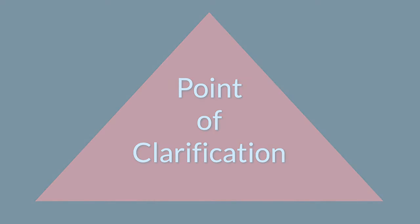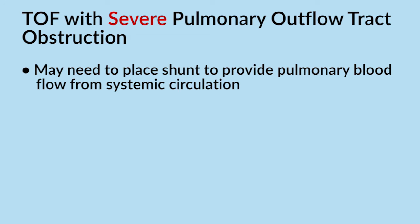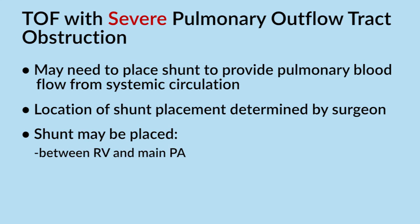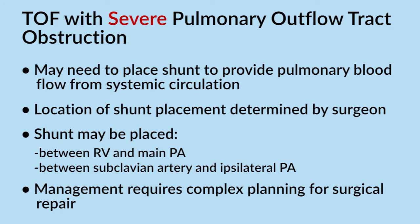Point of clarification. In cases of tetralogy of Fallot with severe obstruction to the pulmonary outflow tract, it may be necessary to place a shunt to provide direct pulmonary blood flow from the systemic circulation. This may be achieved using methods such as placement of a synthetic conduit. The location of the surgical shunt placement is often determined at the discretion of the cardiac surgeon, but can involve placement between the right ventricle and main pulmonary artery, or between the subclavian artery and the ipsilateral pulmonary artery. Specific management of patients with severe pulmonary outflow tract obstruction requires complex planning for surgical repair based upon the patient's specific anatomy.